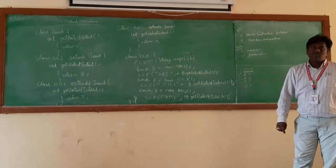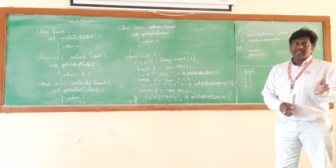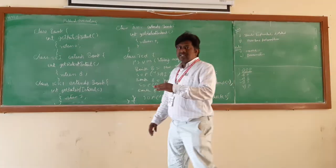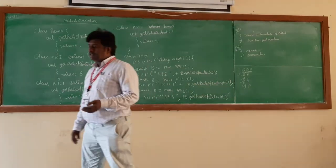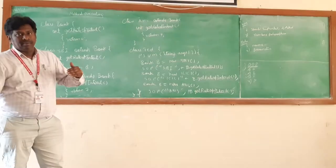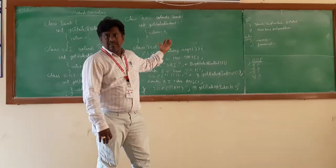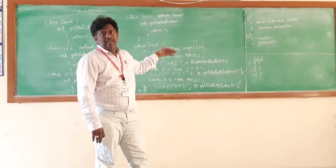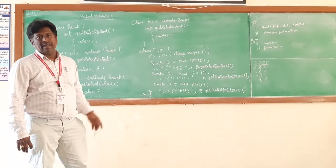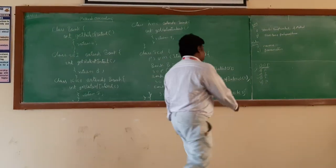The third one is inheritance. Inheritance is where we derive a new class from an already existing class. The properties of the parent class will be inherited by the child class. It is a parent-child relationship. The class derived from the other class is the child class, and the class used to derive from is the parent class.